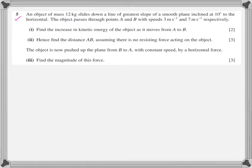Question five: an object of mass 12 kg slides down the line of greatest slope of a smooth plane inclined at 10 degrees. The object passes through A and B with speeds 3 and 7 m/s respectively — so first it passes through A, then B. That means A is higher up the plane and B is lower down. Common sense also tells you that as the particle moves down, velocity increases, so A is definitely higher than B.